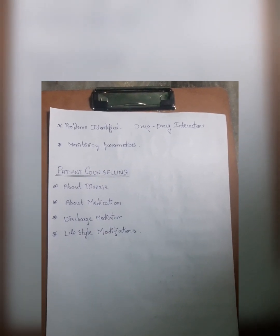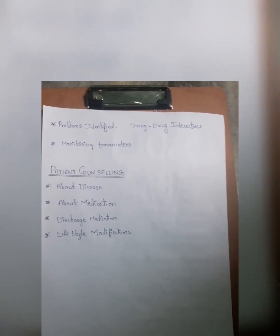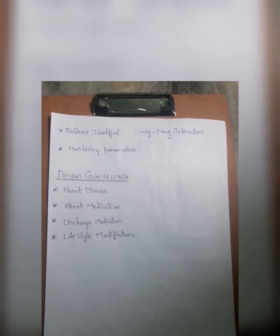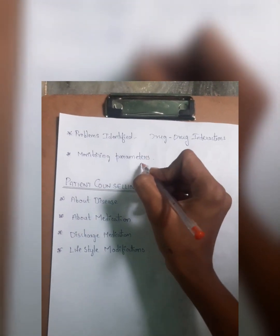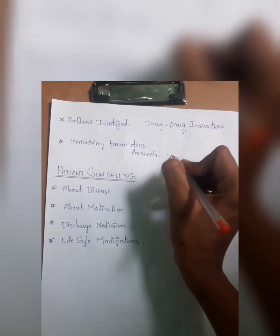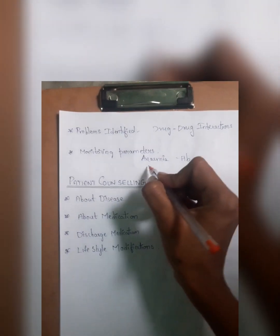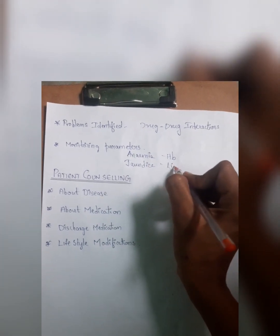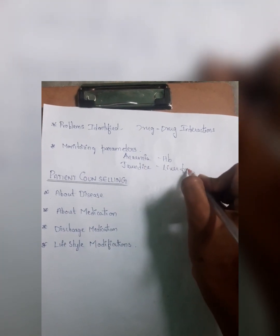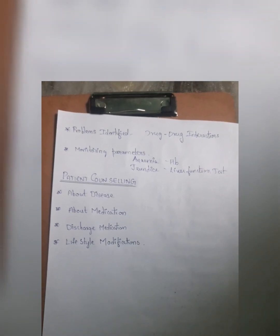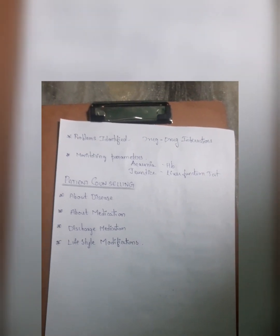Monitoring parameters include which parameters need to be monitored to assess the patient's treatment. For example, if the patient is suffering with anemia, the monitoring parameter will be to check the hemoglobin count. If the patient is suffering with a joint disorder, the monitoring parameter would probably be to check the liver function test. All these are included under the monitoring parameters.